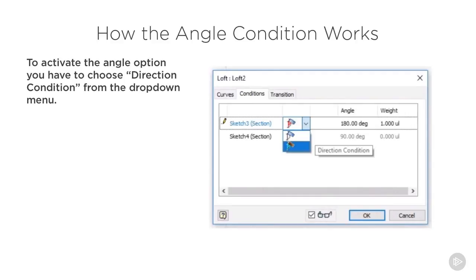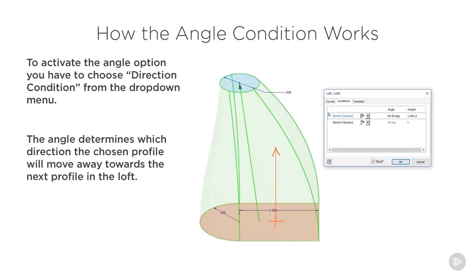So, how the angle condition works. When you're already in the Loft command, as we saw in the last module, for every sketch in your loft, each one has a condition option. You can choose either a free condition — which is the default, allowing Inventor to figure out the shape itself — or you can click the dropdown and choose Direction Condition. When Direction Condition is selected, the angle and weight options on the right-hand side light up; in free condition those options are grayed out.